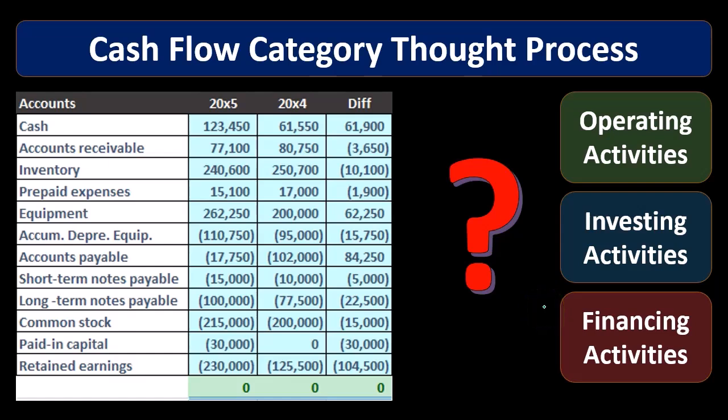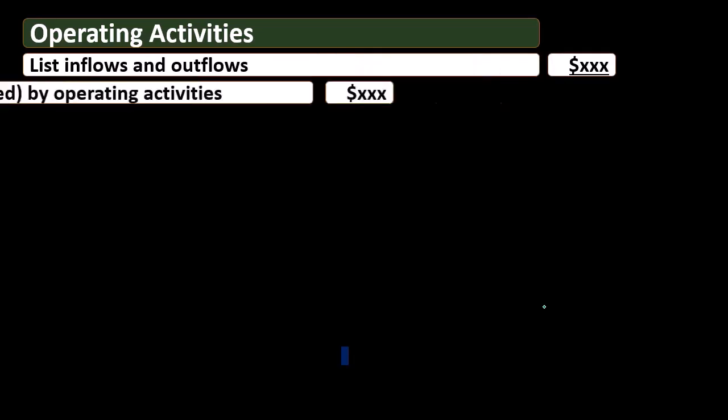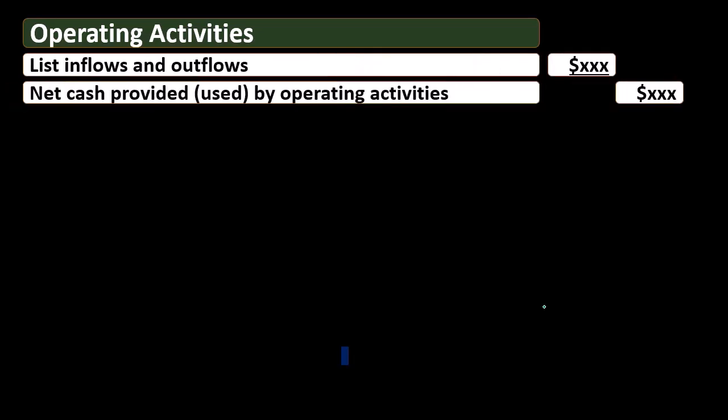We'll see how this looks in a financial statement format. Operating activities will be at the top of the statement of cash flows, where most of the information will be. Operating activities will have a list of inflows and outflows, followed by net cash provided or used by operating activities. We use generic terminology because the terms differ depending on whether we have a cash inflow or outflow.